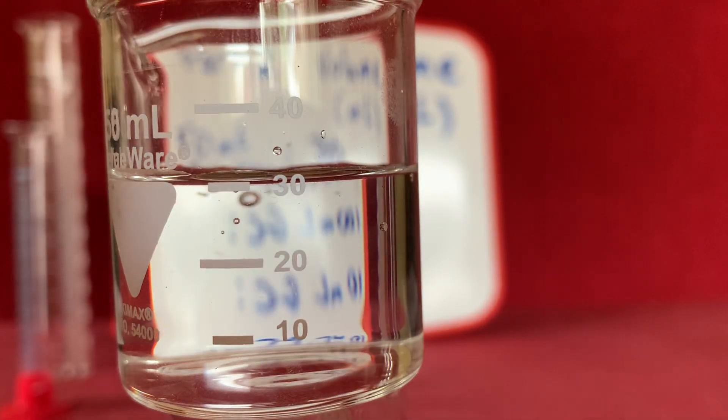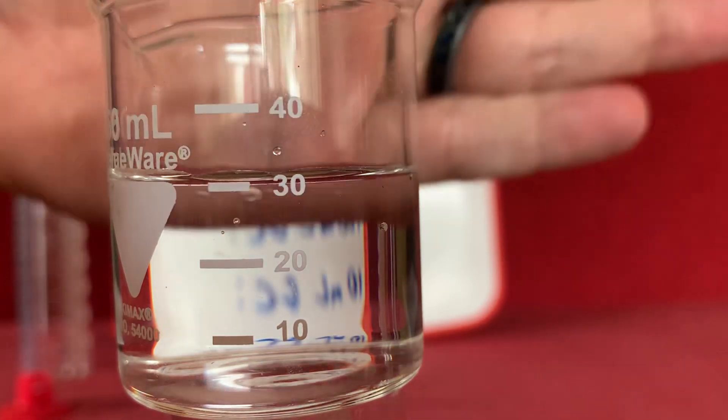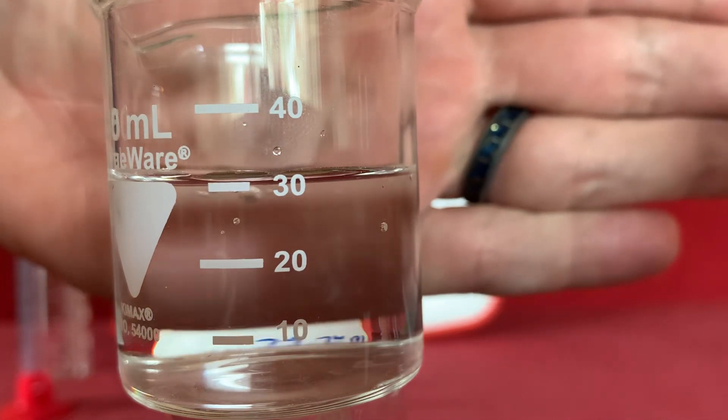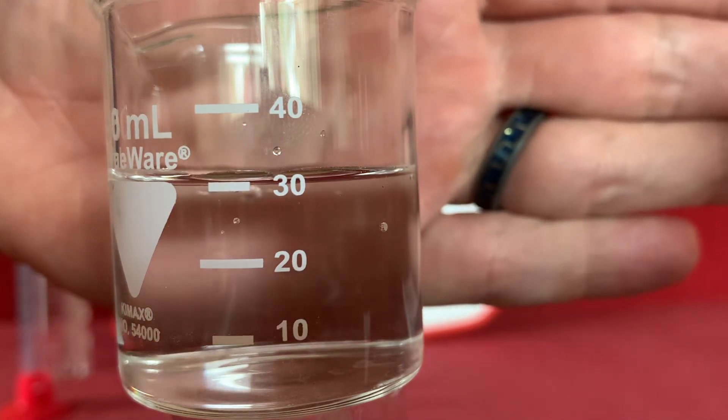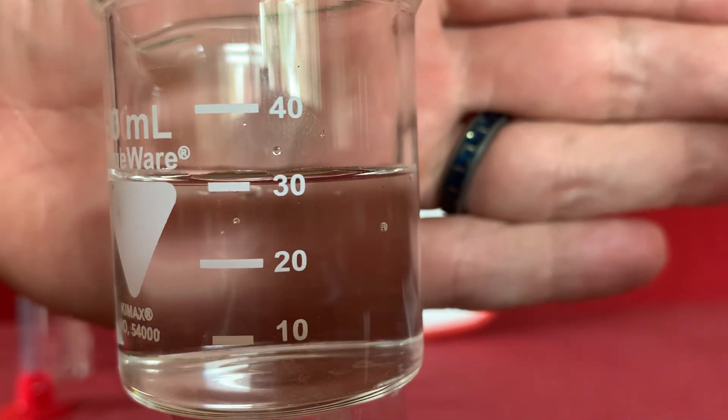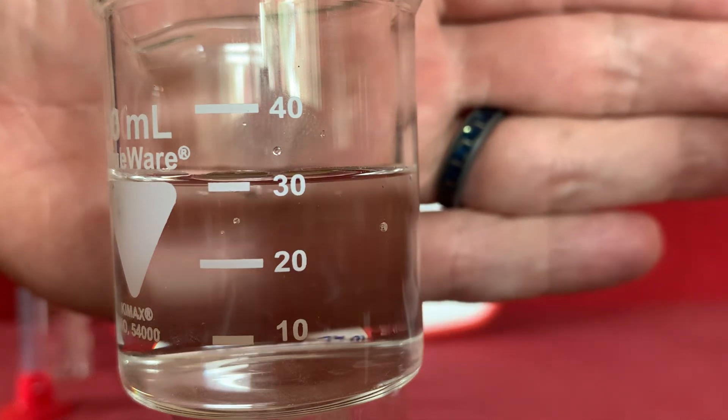All right so there we have 30 milliliters. Notice that when you're measuring volume sometimes it helps to put something of a different color behind the measuring vessel in order to more clearly read where the meniscus is.